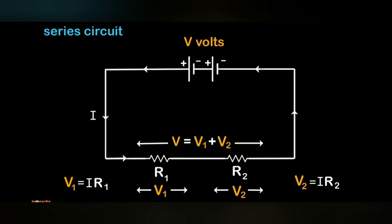At R1 we are having the voltage V1, so V1 is equal to I R1. At R2 we are having the voltage V2. According to Ohm's law, V2 is equal to I R2.